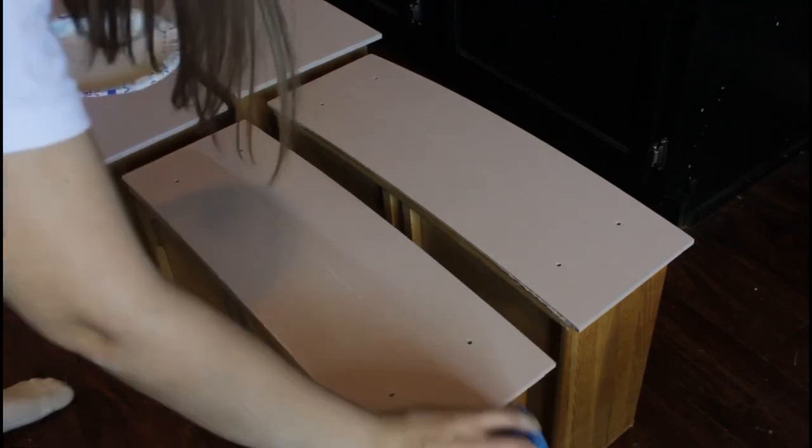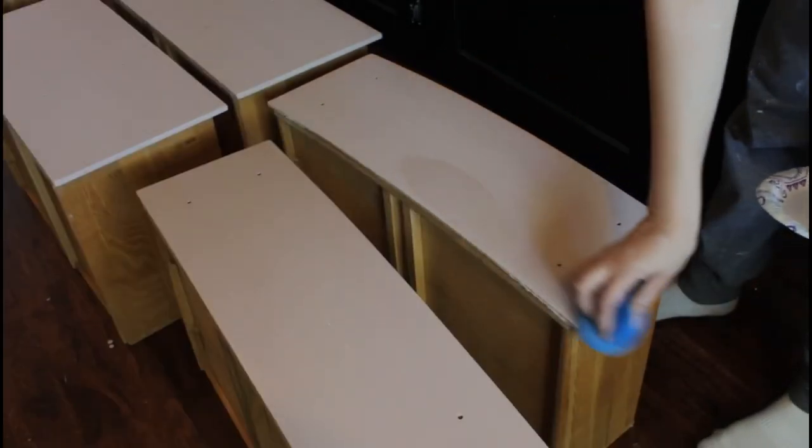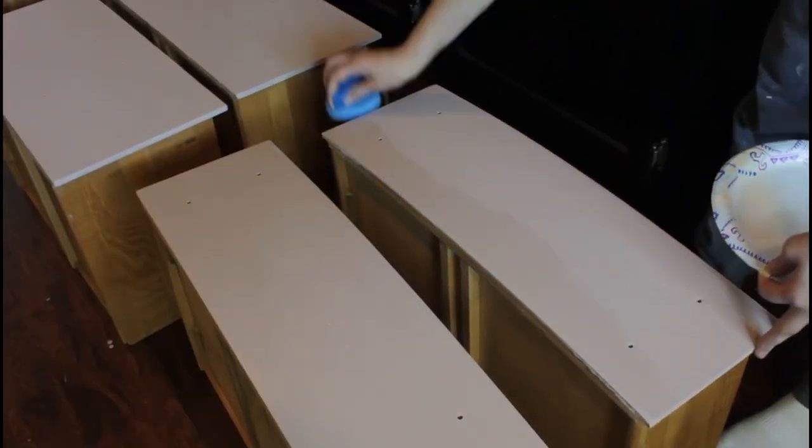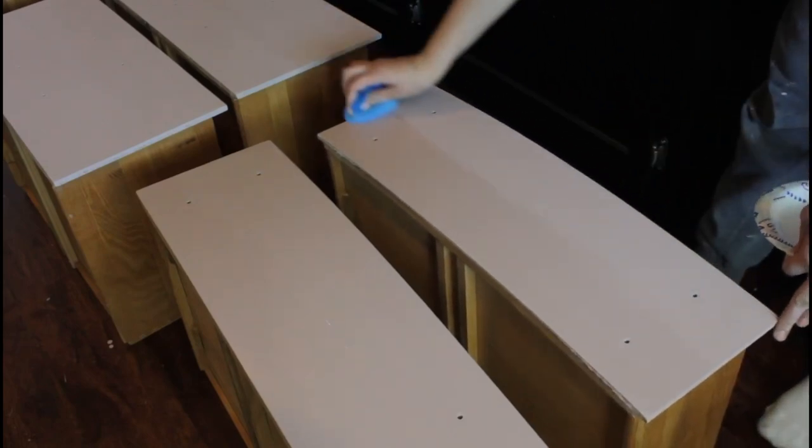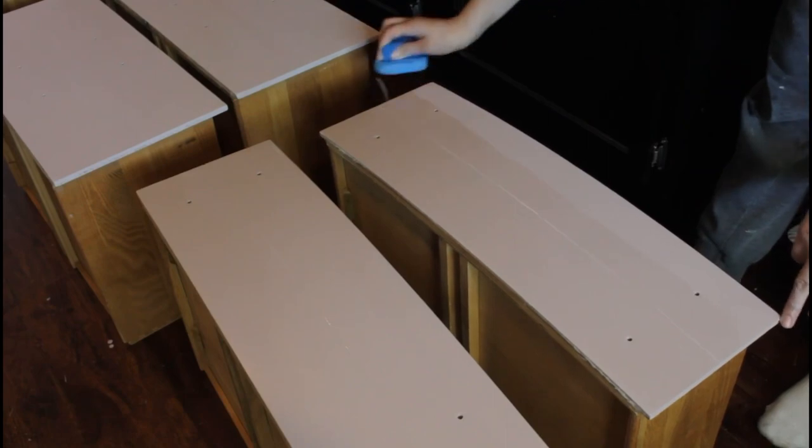I love the sponge technique because it's the one that helps you achieve the smoothest results without a paint sprayer. A lot of people don't have that, or like me, I couldn't use it, so it really is my favorite method to apply polyurethane.